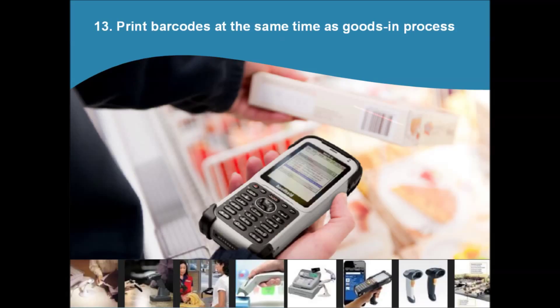Putting barcode labels on your products makes it faster to process sales at point of sale and reduces errors, as long as you get the right labels on the right product. Keeping on top of label printing can be a daunting task if your products don't already come with barcodes. The best time to put a barcode on your products is when the goods first arrive in your business, which is the same process as purchase order goods receipts. This is also the point at which your system can exactly see how many products have just arrived, in order to print the right number of barcodes.